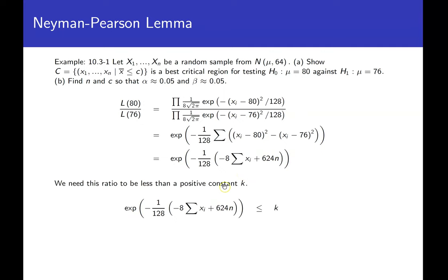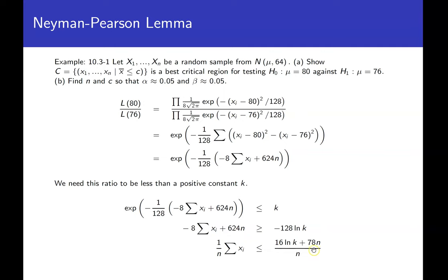We need this ratio to be less than or equal to some positive constant K. Taking the log of both sides, multiplying by negative 128 flips the inequality. Then subtracting and dividing by negative 8 again flips the inequality, and dividing both sides by n gives us the sample mean less than or equal to some constant — confirming the best critical region has the form of the sample mean less than or equal to a constant.